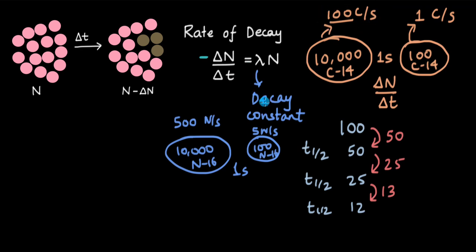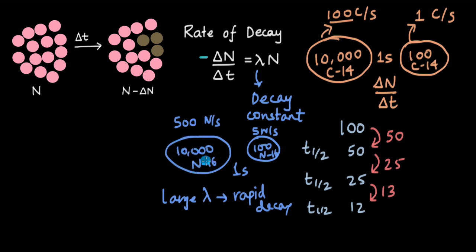What the decay constant really tells us is how likely a radioactive atom is to undergo decay — the probability of decay. If the probability is large, decay happens quicker. A large value of lambda means rapid decay. We see that the probability of one nitrogen-16 atom undergoing decay is much more than for one carbon-14 atom. A small value of lambda means slower decay.